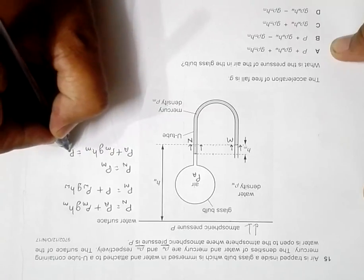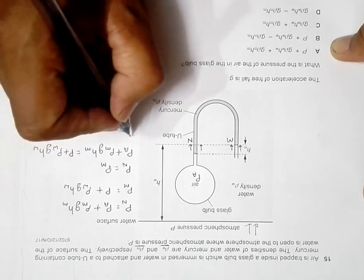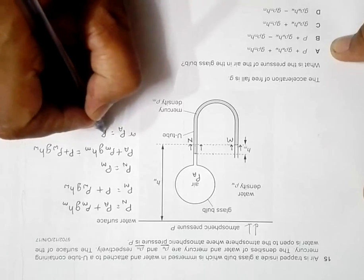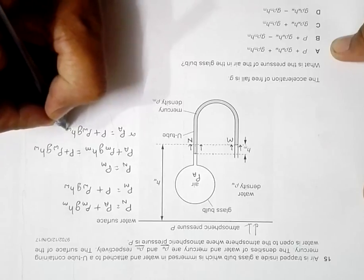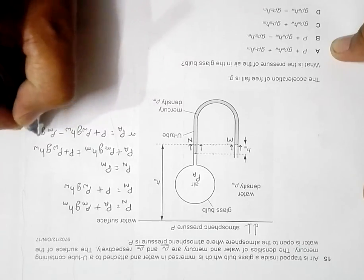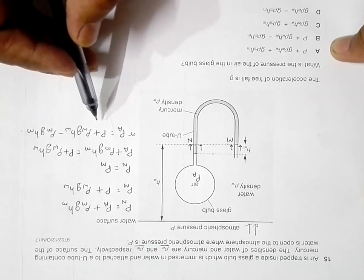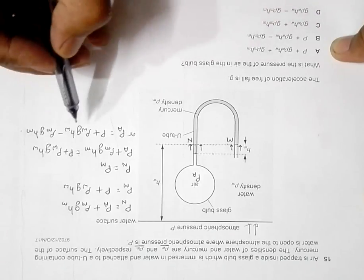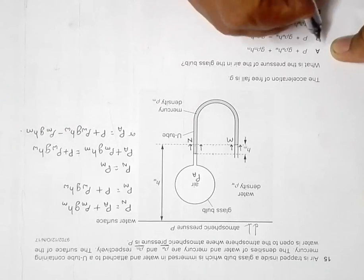So this will give us pressure A is equal to P plus rho w, g, hw minus rho m, g, hm. So now the choice that is equal to this answer is most probably choice number B. So it is choice number B, only that rho w and g, rho m and g are somewhat reversed. So choice number B should be the correct answer.